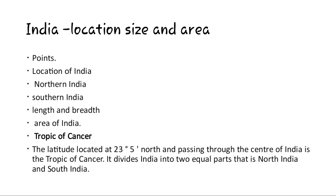In terms of latitude and longitude, India extends almost equally in the north-south and east-west direction — about 30 degrees on both sides. The north-south length from Kashmir to Kanyakumari is about 3,214 km, and the east-west breadth from Gujarat to Arunachal Pradesh is 2,933 km. India spreads over a total area of 32.8 lakh square km and ranks 7th in the world in terms of area.